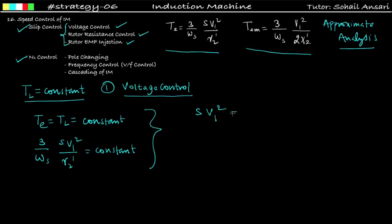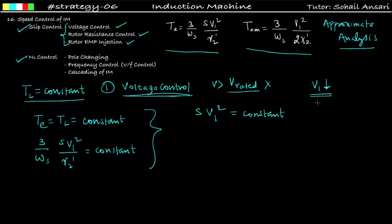From this formula we can conclude that slip × V1² = constant. Now in voltage control, we cannot increase the voltage above the rated voltage — induction motors are generally run at rated voltage. If we go beyond rated voltage, the winding insulation may get damaged since insulation stress is directly proportional to voltage. So in voltage control we decrease the supply voltage.